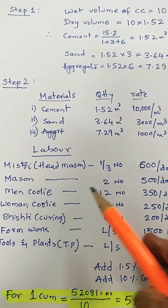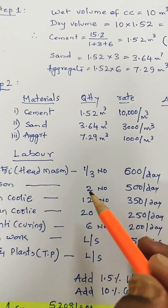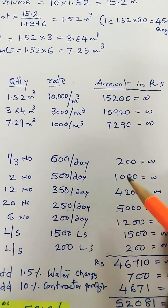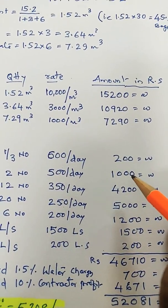Mazon is the main mazons required. Remember we are calculating this for 10 cubic meters. So for 10 cubic meters, the main mazons required is two numbers, each 500 per day. The rate comes out to 1,000 rupees.